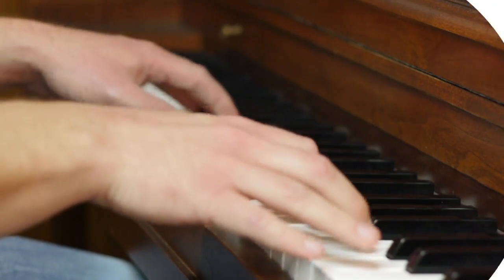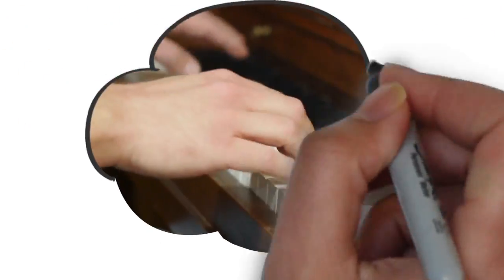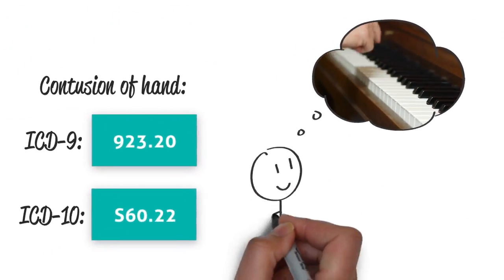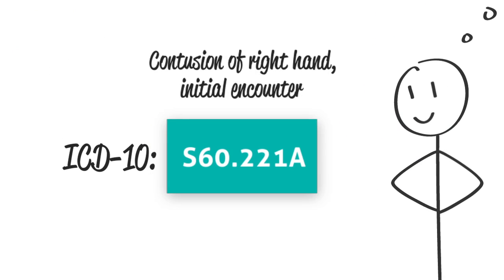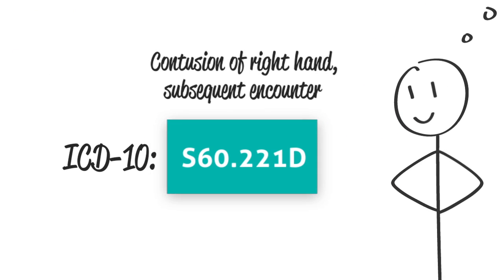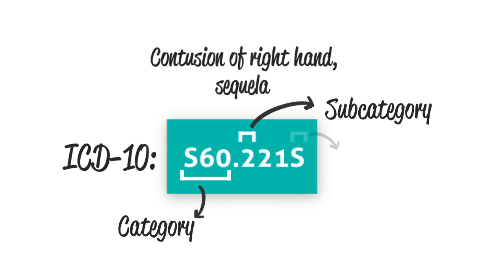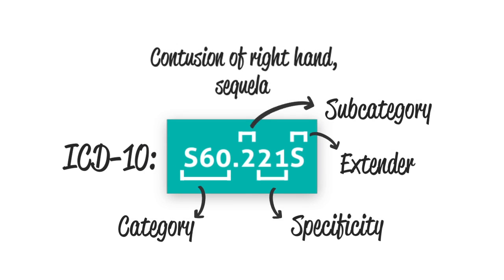The finger bone's connected to the hand bone, the hand bone's connected to the wrist bone. Knowing that level of anatomy may be fine for ICD-9, but it won't cut it for coding ICD-10. You need to know a bunch more about human anatomy and physiology to code properly in ICD-10. The codes are much more specific. So what is anatomy and physiology?